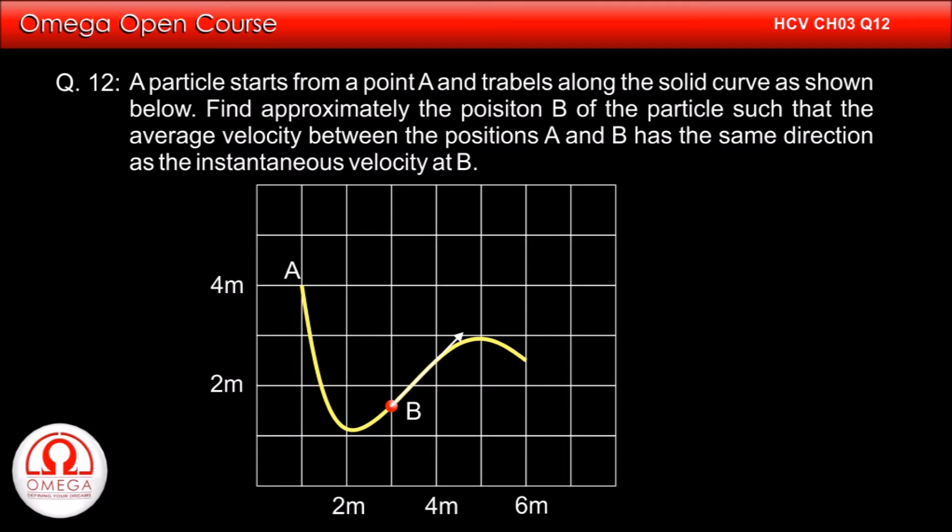Also, at B, the direction of instantaneous velocity is along the tangent to the path at B.